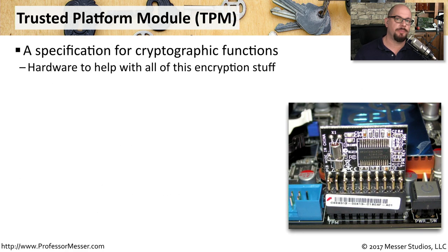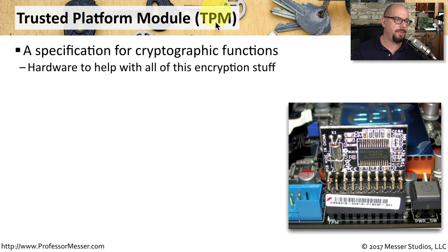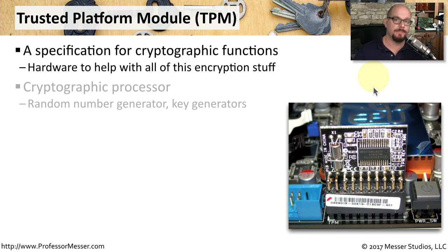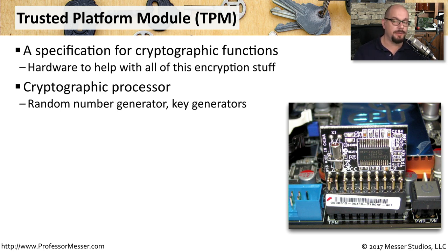All of these advanced cryptographic functions that we use on our devices need some type of hardware to support this functionality, and we do that through a Trusted Platform Module, or TPM. This is a piece of hardware in your computing device that's in charge of handling all of these high-level cryptographic functions. For example, a lot of the encryption and decryption we use today requires random numbers, and there's a random number generator and a key generator built into the Trusted Platform Module.